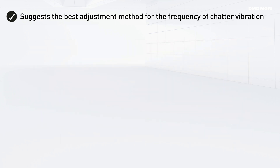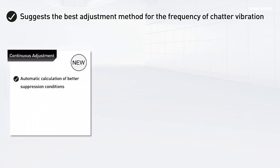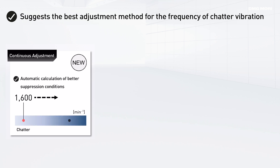First, let us look at the continuous adjustment function. Here, the fed-back chatter vibration is analyzed to precisely change the spindle speed and transition to the stable region with better cutting conditions.